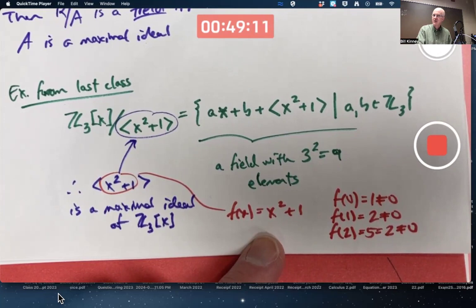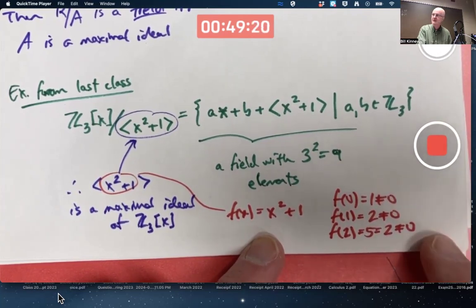Being a quadratic, that also means you can't factor it over Z3. You can't factor it as the product of two lower degree polynomials because it's got no roots. It's also related to the fact that its degree is 2 that allows you to say that.